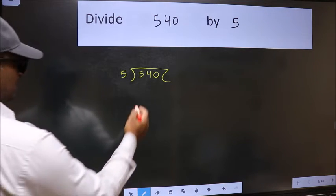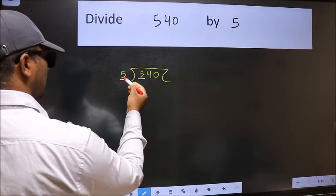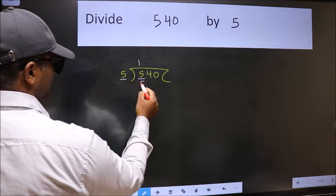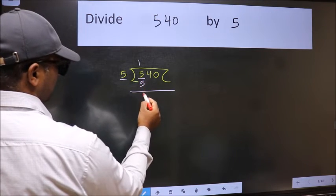Next, here we have 5 and here also 5. When do we get 5 in the 5 table? 5 once is 5. Now we should subtract. We get 0.